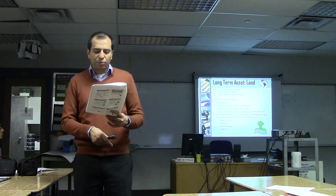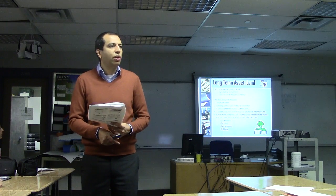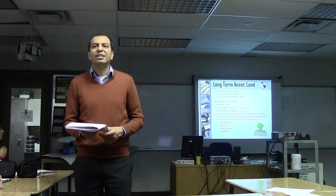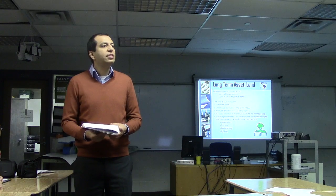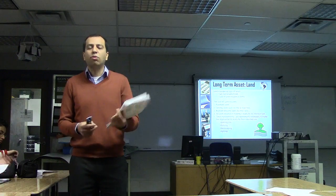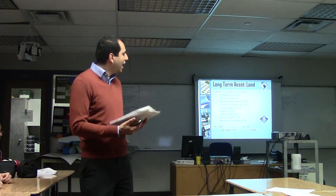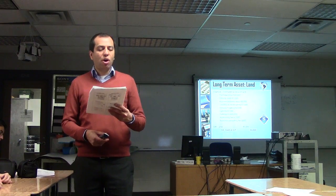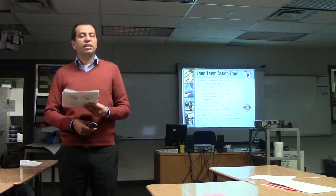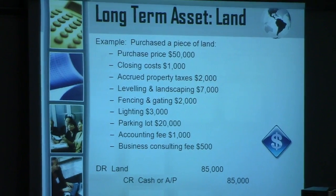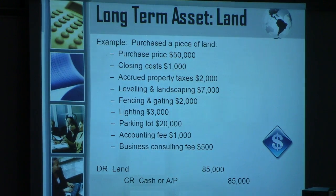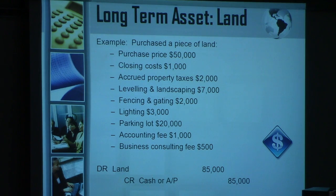Land improvements such as fencing and landscaping are also part of the asset cost. An example lists all the costs that are part of purchasing a piece of land. Notice that a couple of items — the accounting fee and the business consulting fee — are not part of the purchase price; those are expenses. The rest are costs. You would debit land and credit cash or accounts payable, including all those qualifying costs.